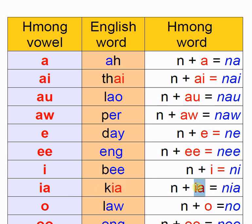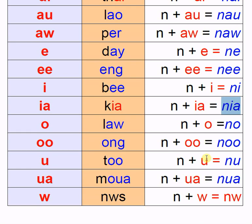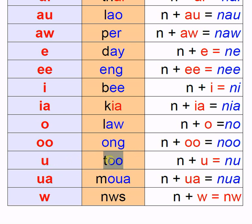The next vowel is O, like 'lō'. The example is Nong — not 'on' but 'ong'. Then there is U, like 'tù'. The Hmong example word is Nong.